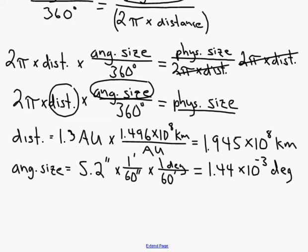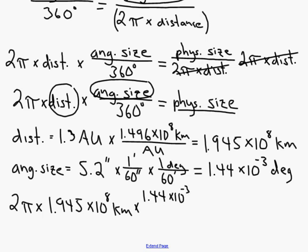I think we're ready to rewrite our equation and put numbers in for all the variables. So we've got 2 times pi times the distance, which was 1.945 times 10 to the 8 kilometers, and we'll multiply it by angular size on top, 1.44 times 10 to the minus 3 degrees, divided by 360 degrees. And this is going to equal the physical size, which we said was the diameter.